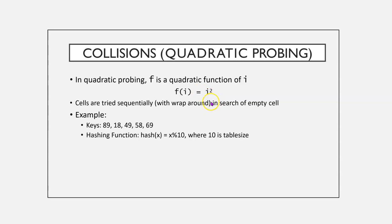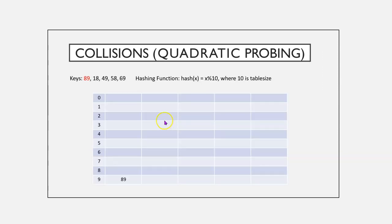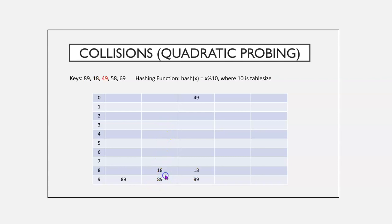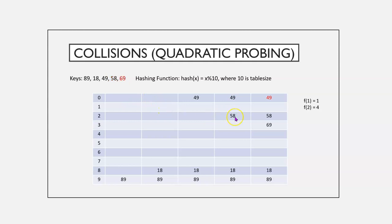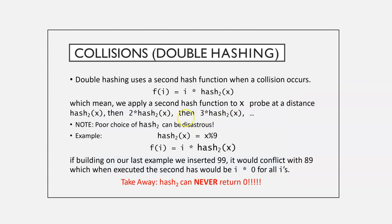In quadratic probing, F is a quadratic function. Cells are tried sequentially, so here, 89, 18, 49 would look like we get this. 89, then we probe again, and we get 18, 49, they would end up in 1 again, or 0 again. F of 1 equals 1, and F of 2 would be 4 here. So, the next collision, our 58, would end up here. And, again, we'd see a different result with, hopefully, a wider distribution.